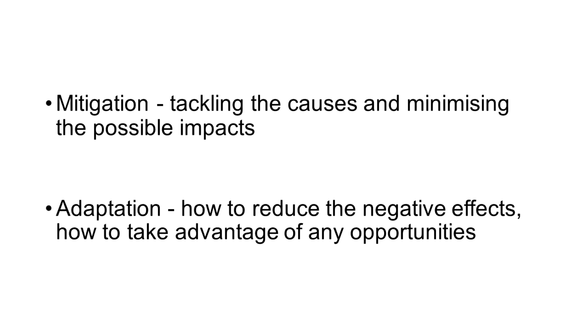When it comes to the management of climate change, we break it into two approaches: mitigation and adaptation. Mitigation is tackling the causes and minimising the possible impacts — what we're going to do to reduce our emissions. Adaptation means reducing the negative effects and trying to take advantage of the opportunities — it's not necessarily stopping climate change, but how we can deal with its consequences.